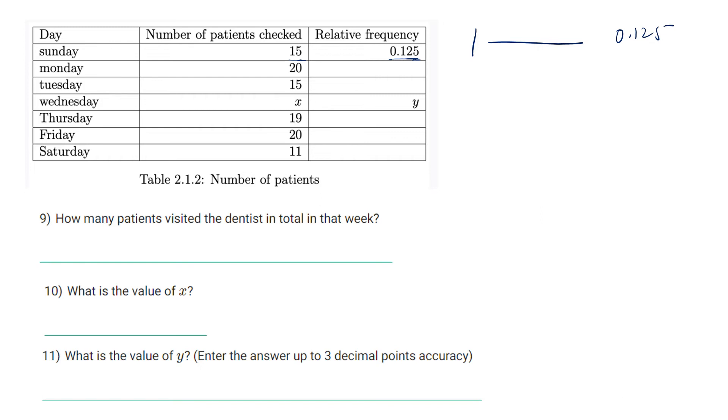We should form the equation like if the relative frequency is 0.125 then total is 1. If it is 1 then total will be 1 upon 0.125. If it will be 15, then 15 upon 0.125. We have to divide 15 by 0.125, and it will be 120.